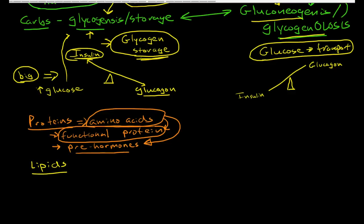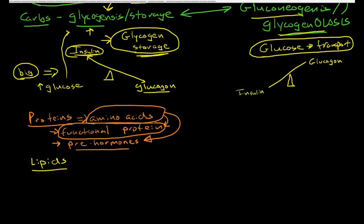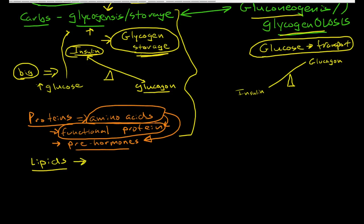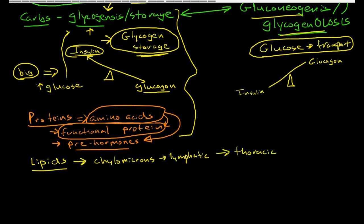With lipids, the liver has a very important role. All of the water-soluble nutrients — including carbohydrates and proteins — are absorbed into the bloodstream into the portal system and go directly to the liver. Lipids, on the other hand, are not absorbed into the bloodstream. They are packaged into chylomicrons, which are too big to be absorbed into the bloodstream, so they drain through the lymphatic system and into the thoracic duct, working their way up through the chest and draining into the left subclavian vein.